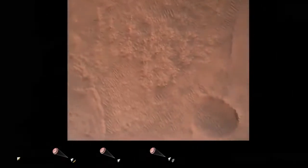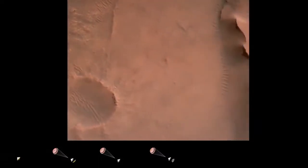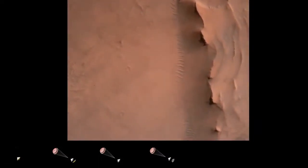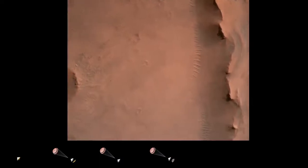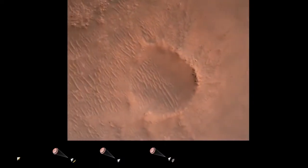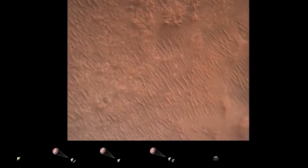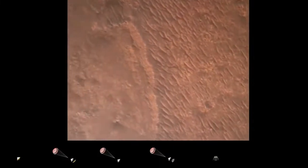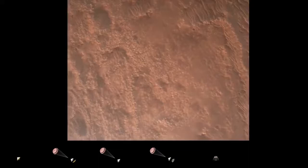Back shell separated. Current velocity is 83 meters per second at about 2.6 kilometers from the surface of Mars. We have confirmation that the back shell has separated. We are currently performing the divert maneuver. Current velocity is about 75 meters per second at an altitude of about a kilometer off the surface of Mars.